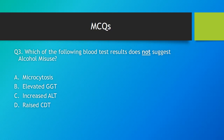Question 3: which of the following blood test results does not suggest alcohol misuse? The correct answer is option A — microcytosis. In alcohol misuse you would expect macrocytosis, or an increase in mean corpuscular volume.